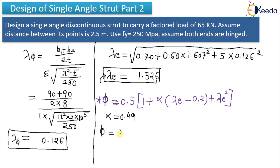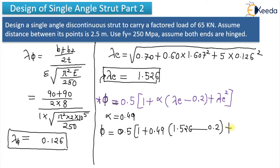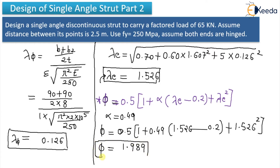Putting all values into the phi formula: 0.5 × [1 + 0.49 × (1.526 − 0.2) + 1.526²]. After calculations, phi = 1.989.